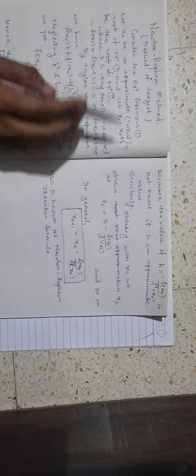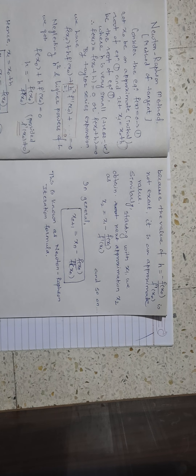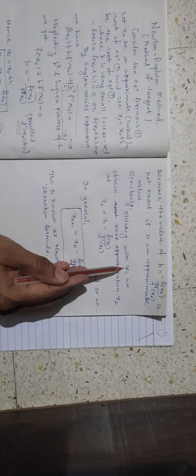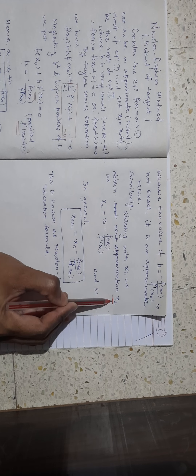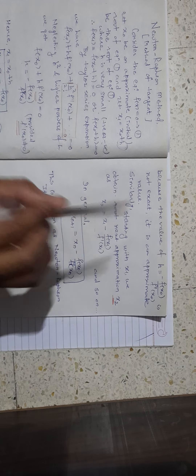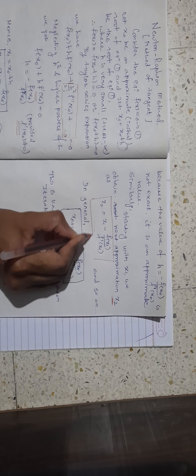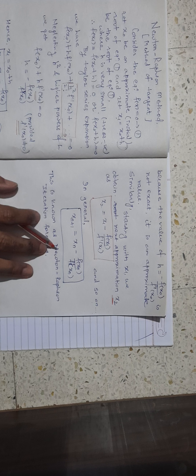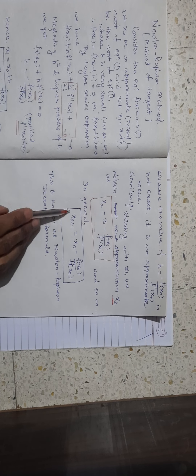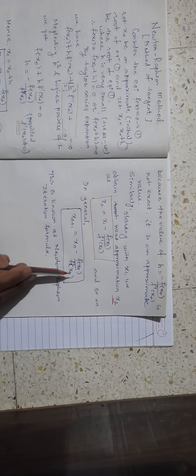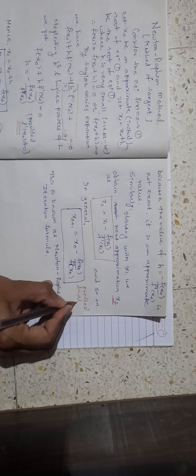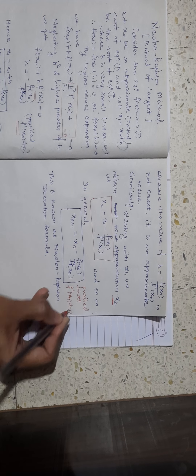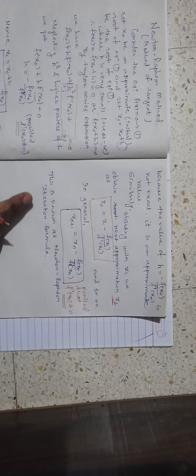Note that x₁ is obtained from this formula but may not be the exact root — it is a better approximation than x₀. This happens because h is an approximate value, so we don't get the exact root but a better approximation in every iteration. Starting from x₁, we find the next approximation x₂ = x₁ - f(x₁) / f'(x₁).